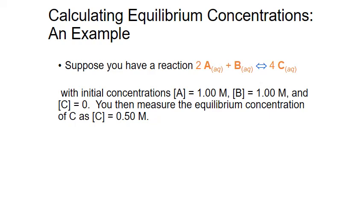Let's look at an example. Suppose you have a general reaction involving two molecules of A aqueous — dissolved in water — combining with one molecule of B to produce four molecules of C. We measure the initial concentrations of our reactants A and B as one mole per liter, and initially we have no product present, so the concentration of C is zero. We allow the reaction to go to equilibrium and we're able to measure the concentration of just C, which at equilibrium has increased to 0.50 moles per liter.